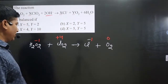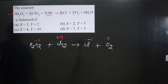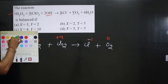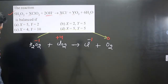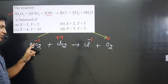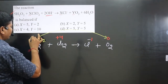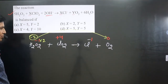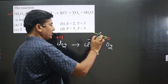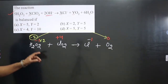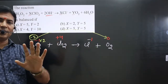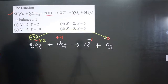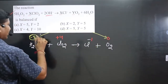Now we compare oxidation numbers. For oxygen: one oxygen is -1, so two oxygens give -2. On the other side, O₂ is a neutral molecule with zero oxidation number. Comparing -2 to 0, there is an increase in oxidation number, which is always an oxidation reaction. The difference is 0 minus (-2) = 2 electrons.